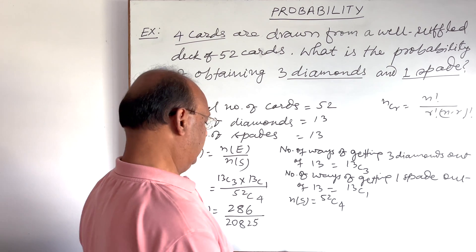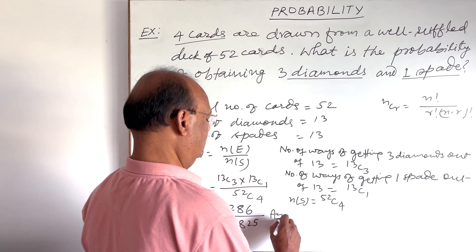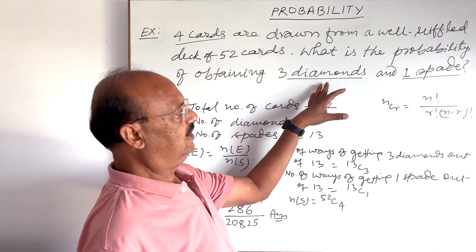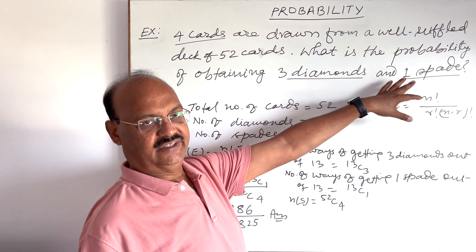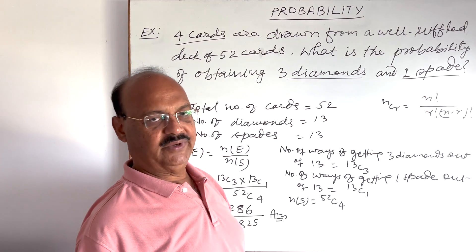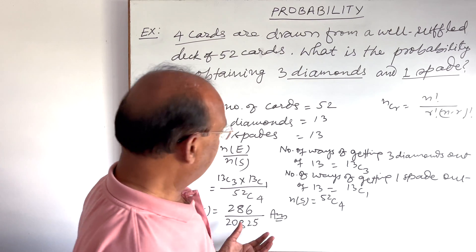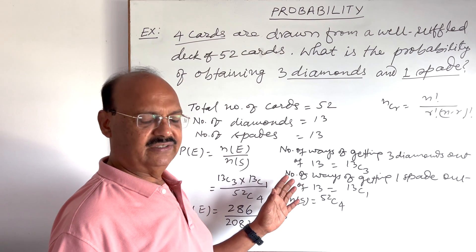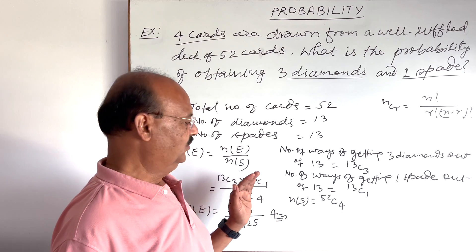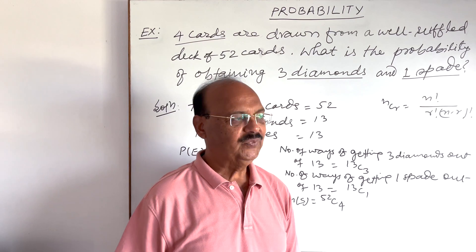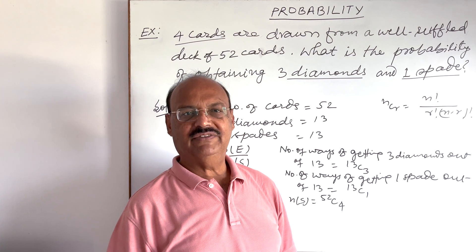And this is the answer here. This is the required probability of getting three diamonds card and one spade card when four cards are being drawn from the well-shuffled deck of 52 cards. So the question is very interesting, very simple. Hope you got the method of solving this question.